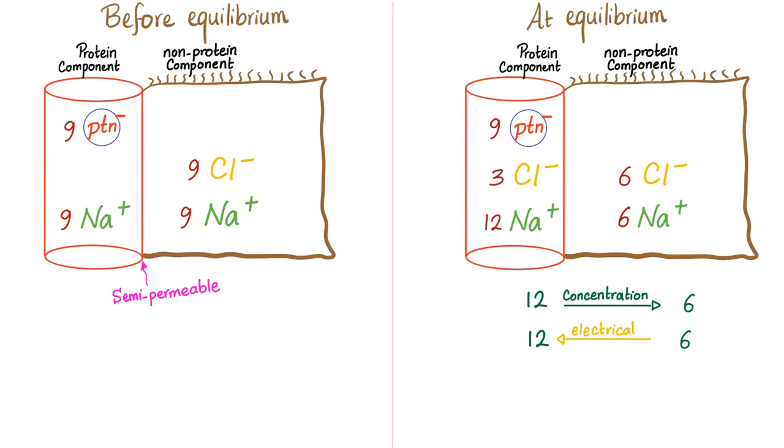Here is how it happens before the Donnan's equilibrium. It looks like this. In the protein compartment, which is in the blood vessel because this is the only compartment that has plasma proteins because plasma proteins are too big to pass, we have nine plasma protein particles. And as you know, plasma proteins are negative. Therefore, you have to have nine positive something. Oh, in this case it's the sodium. Cool. And inside the cell, you have nine sodiums and nine chloride. Wonderful.